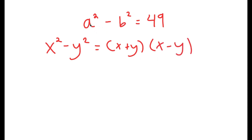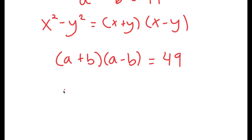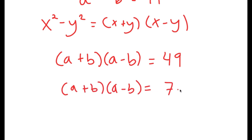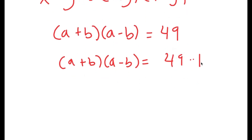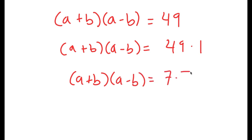In this case, a squared minus b squared — a is x and b is y. So this turns into a plus b times a minus b is equal to 49. Now from here, I can rewrite 49 as 49 times 1, and also as 7 times 7.